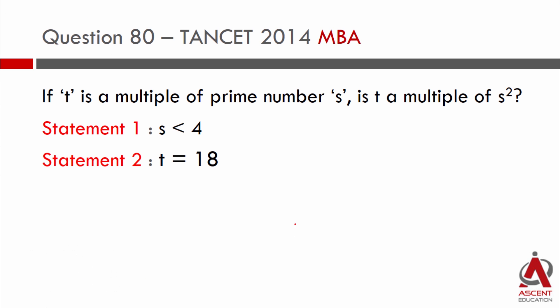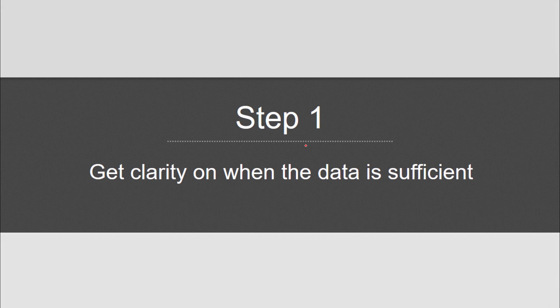If t is a multiple of prime number s, so question stem says t is a multiple of s, s is a prime number. What we need to answer from the data given is whether t is a multiple of s square. What we will do is get clarity on these three questions.